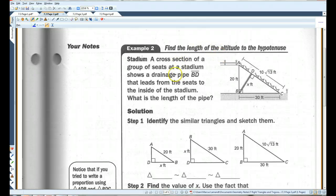A cross-section of a group of seats at a stadium shows a drainage pipe, BD, that leads from the seats to the inside of the stadium. What is the length of the pipe? This is what we have. We have this triangle and an altitude drawn like so. First thing we have to do, we have to separate these triangles.